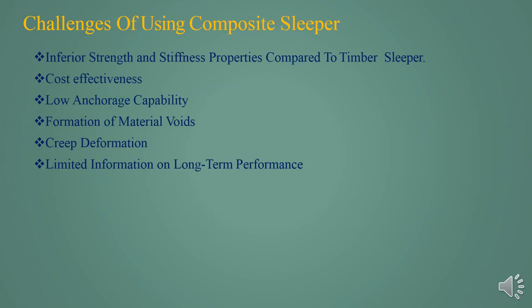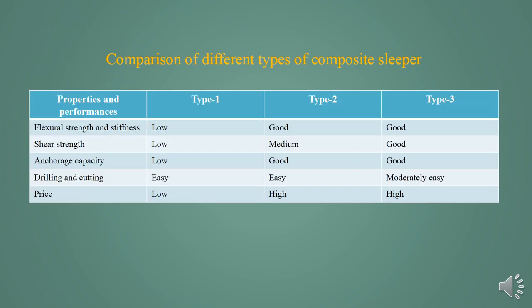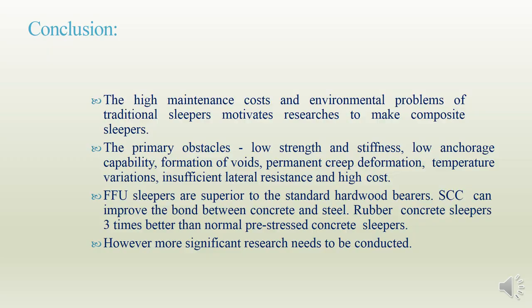Challenges using composite slippers. There are some challenges, but the main challenge is limited information on long-term performance. In the comparison of different types of composite slippers, the flexural strength and stiffness of Type 1 is lower than Type 2 and Type 3, but drilling and coating is much easier as compared to Type 3.